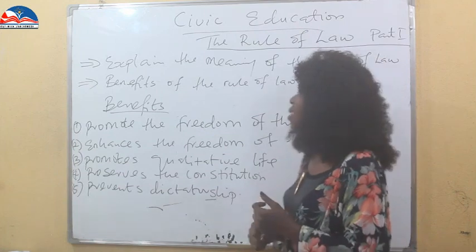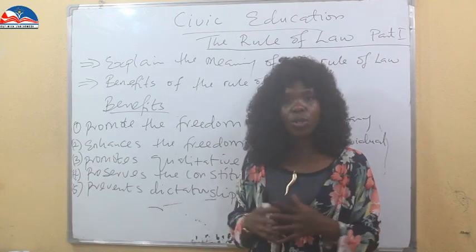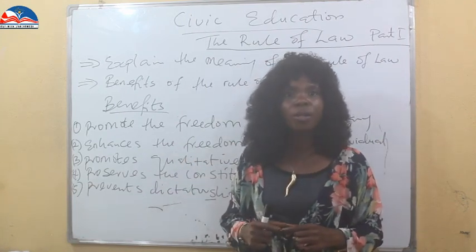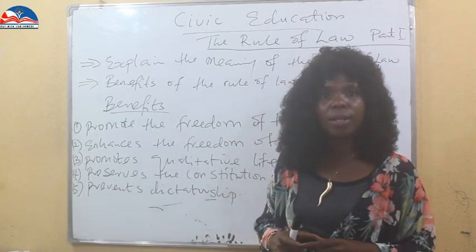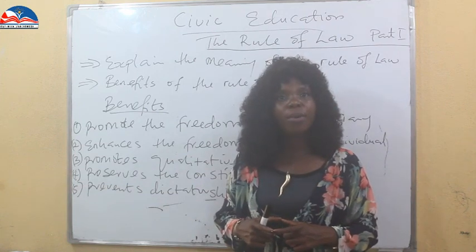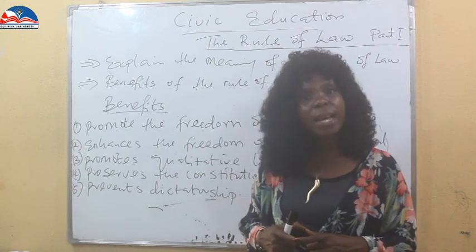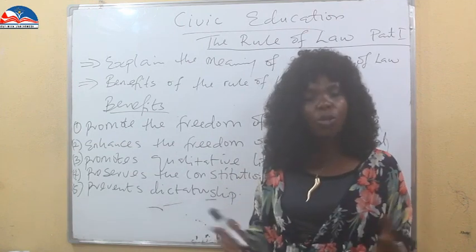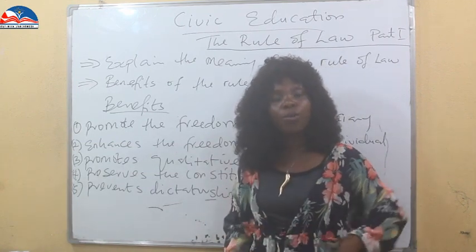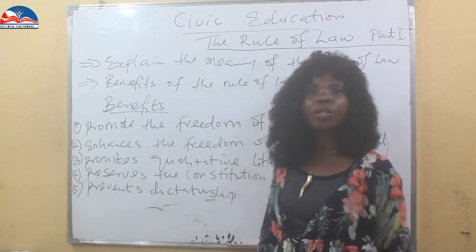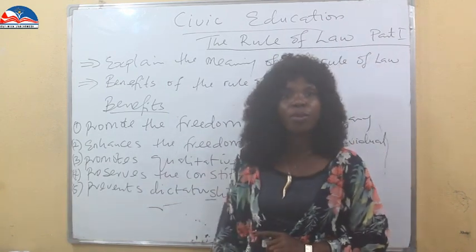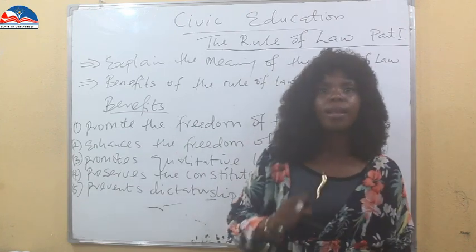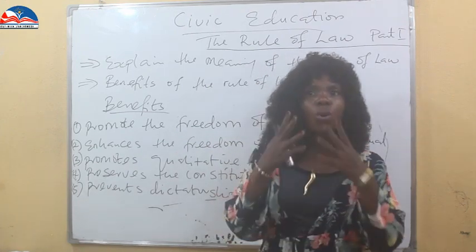The fifth benefit is that it prevents dictatorship — where someone in governance might have the sole right to impose their views and opinions on citizens, or bring in unconstitutional activities into the governance of the country. The rule of law goes against that. It prevents dictatorship by making clear that nobody is above the law. Whether you are in governance or not, you are within the framework of the law, and the law catches up with you if you go against it.